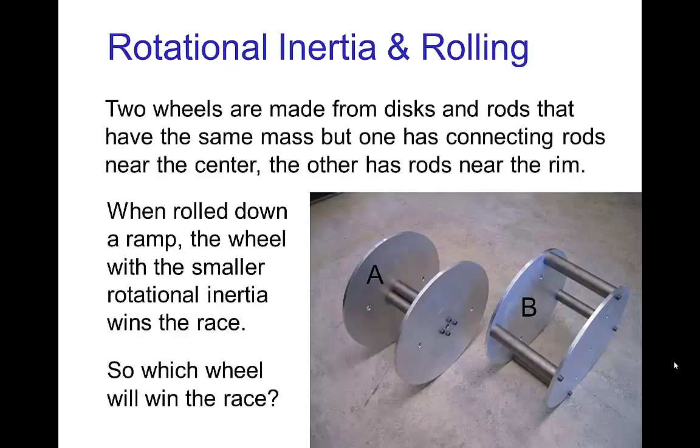Let's look at another example here. I have a pair of wheels and the wheels are similar except that one wheel has four metal rods connecting the discs near the center. And then the other wheel has similar metal rods, but they're located around the rim. Now if I roll these down a ramp, the wheel with the smaller rotational inertia is going to win the race.